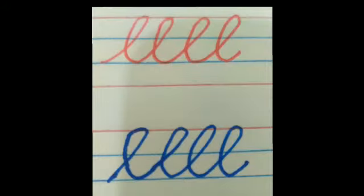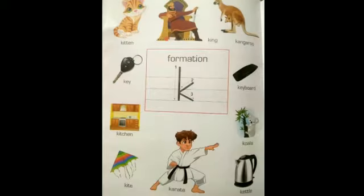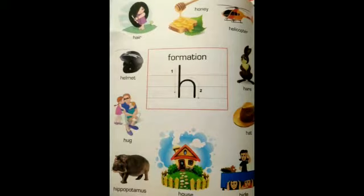Children, you have already learnt pattern L and you know about the loop. In today's lesson, we will learn writing H. H says 'her' and K says 'ker'. Before starting the lesson, let us look around and find five objects starting with letter H.